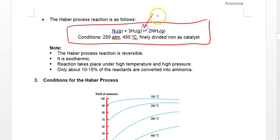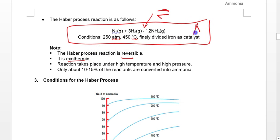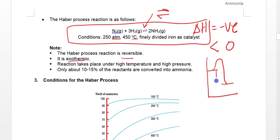To sum up the Haber process equation — take note of the reversible arrow, do not write a single-direction arrow. Some key points: it's a reversible reaction and it's exothermic, meaning it releases heat, so the ΔH value is negative (less than zero), meaning the products are at a lower energy level than the reactants. Even at high temperature and pressure with a catalyst, only about 10–15% of the reactants are converted into ammonia.